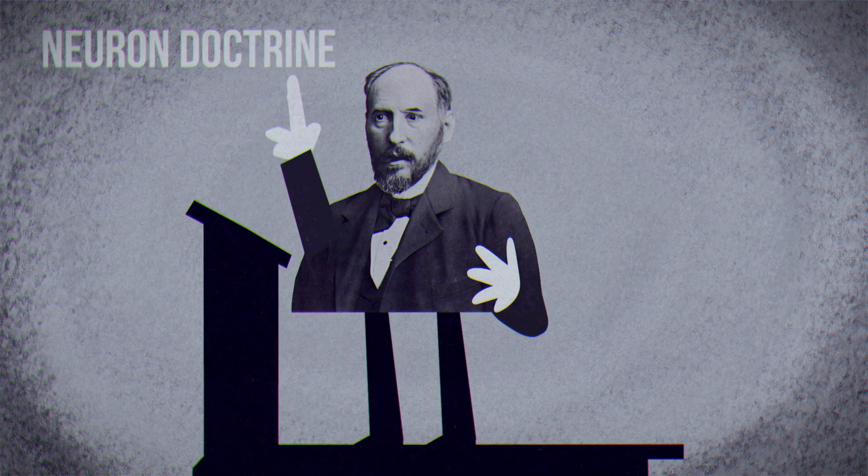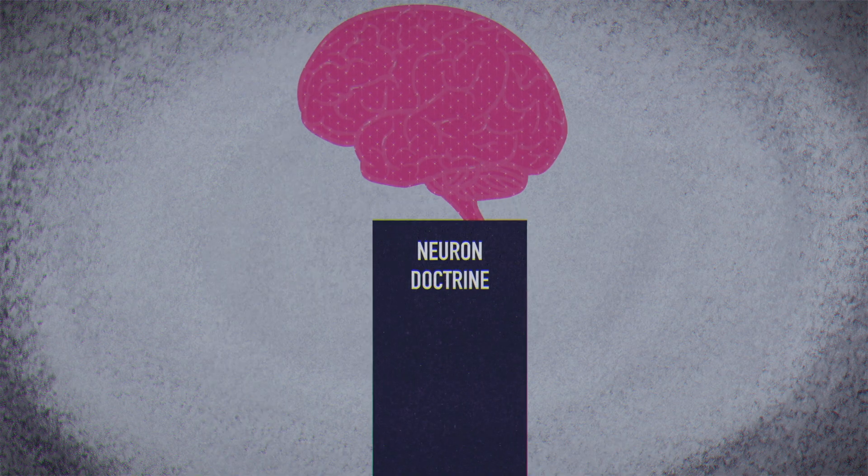This formed the basis of the neuron doctrine, which proposed the brain's tissue was made up of many discrete cells instead of one connected tissue.